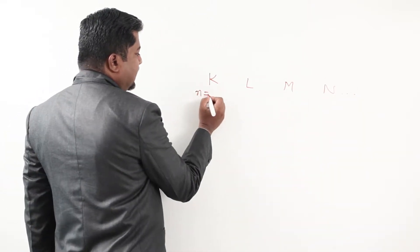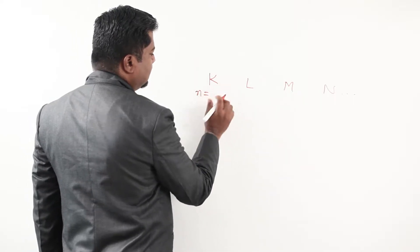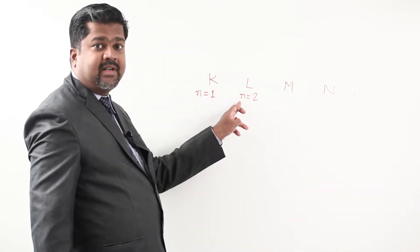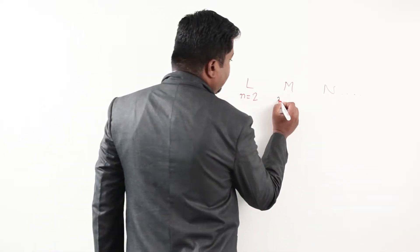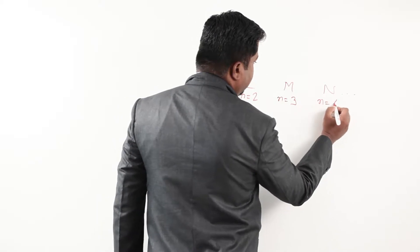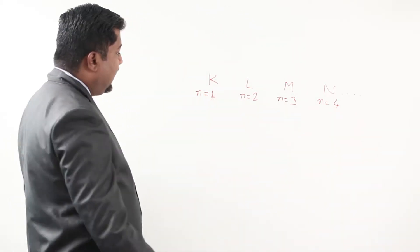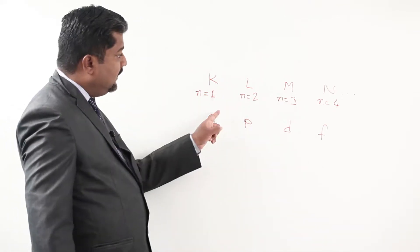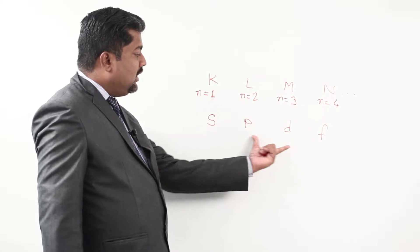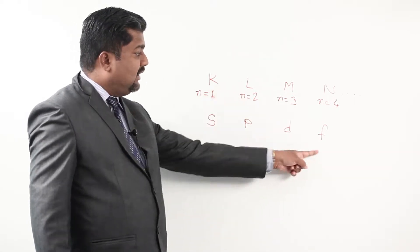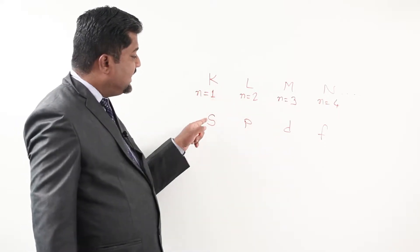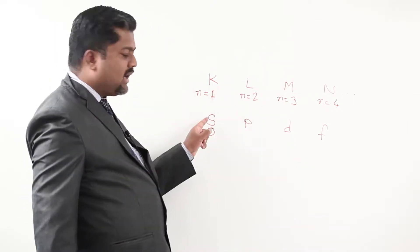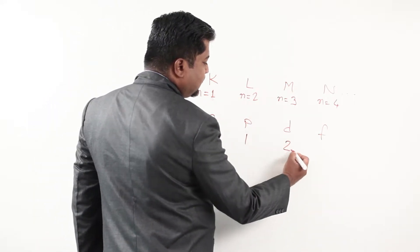K means N equal to 1, L means N equal to 2, where N is the principal quantum number or main shell number. Here we get N equal to 3, N equal to 4 and so on. Subshells are called SPDF. These subshells have numbers: if the number is zero, we call that S; P is 1; D is 2; and F is 3.